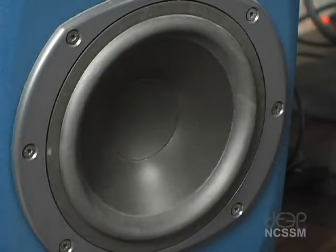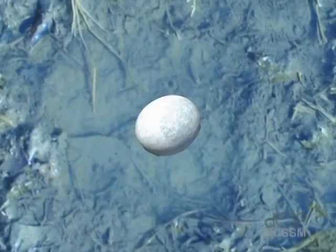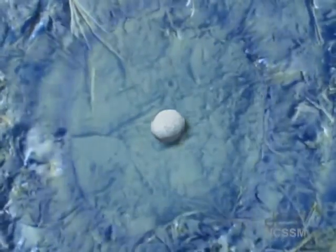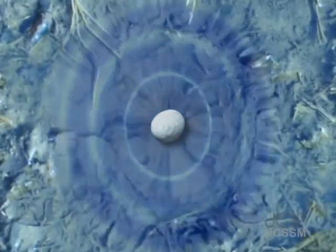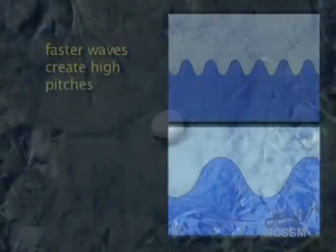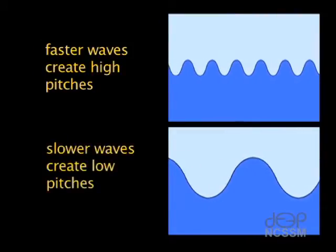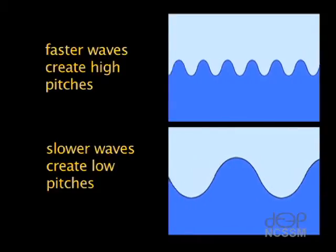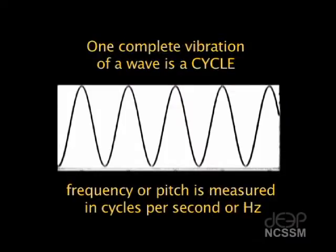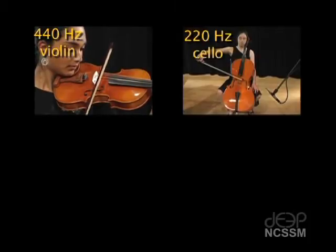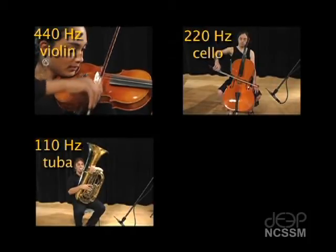First, the sound is created by changes in air pressure. Second, these changes occur in a wave-like motion. Third, faster waves or frequencies represent high pitches. Slower waves or frequencies represent low pitches. Fourth, one complete vibration of a wave is a cycle, and frequency or pitch is measured in cycles per second. Finally, octave relationships between pitches are represented by a doubling relationship.